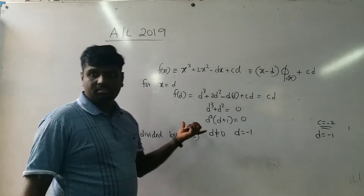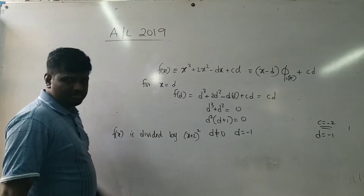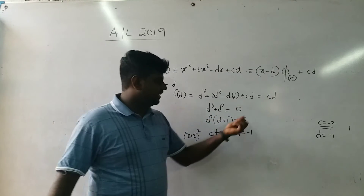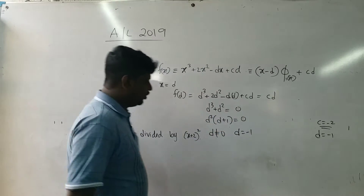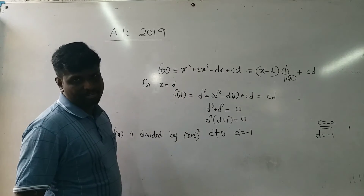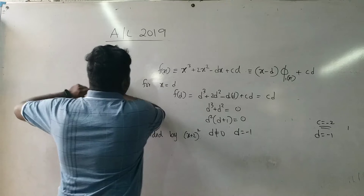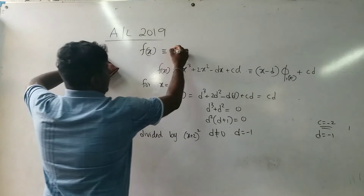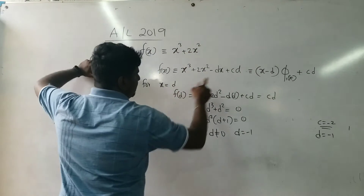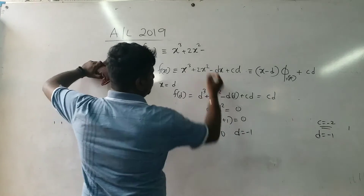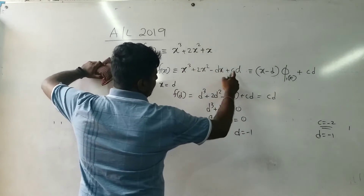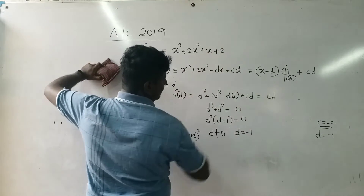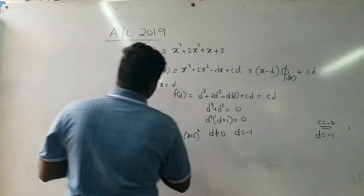Now with c equals minus 2 and d equals minus 1, we rewrite f(x). Substituting these values: f(x) equals x³ + 2x² + x + 2. The question now asks for the remainder when f(x) is divided by (x + 2)².